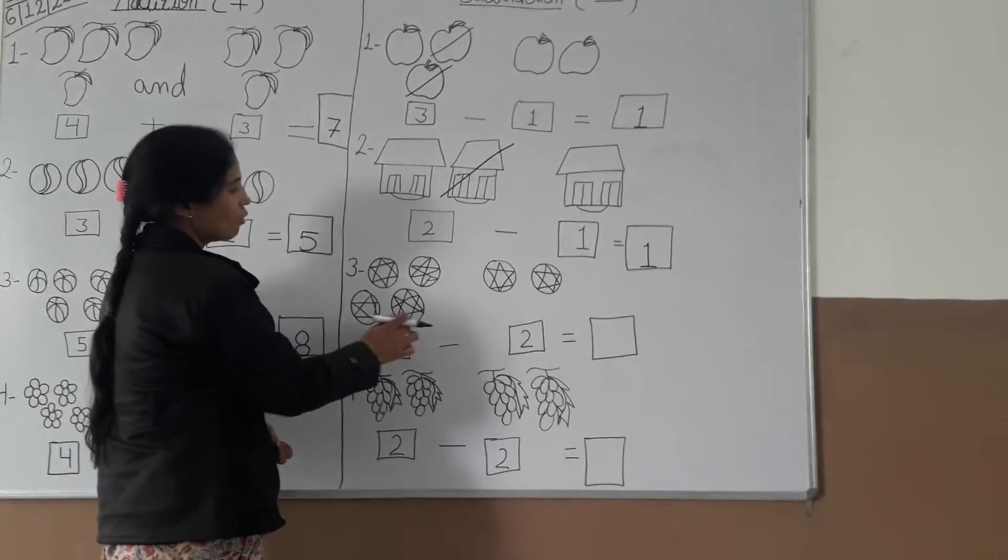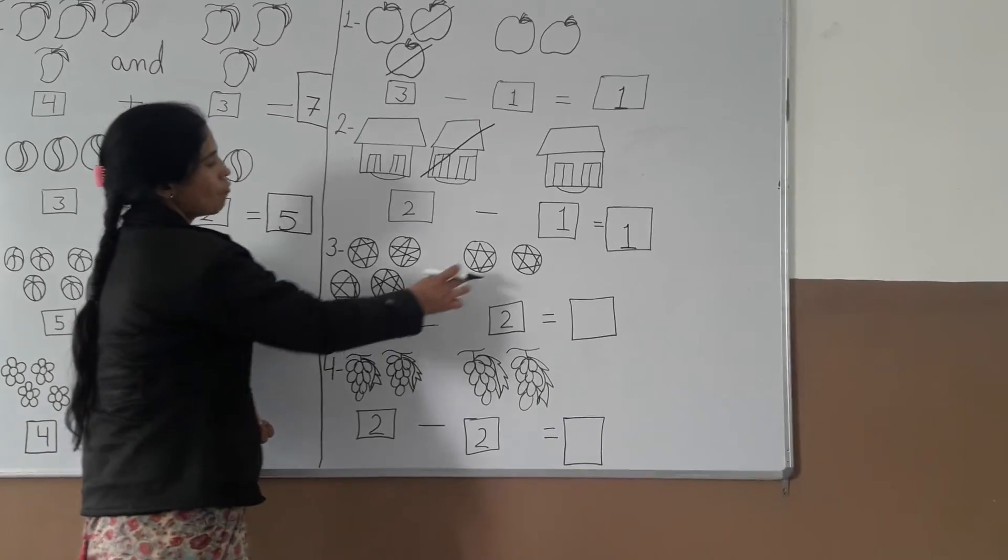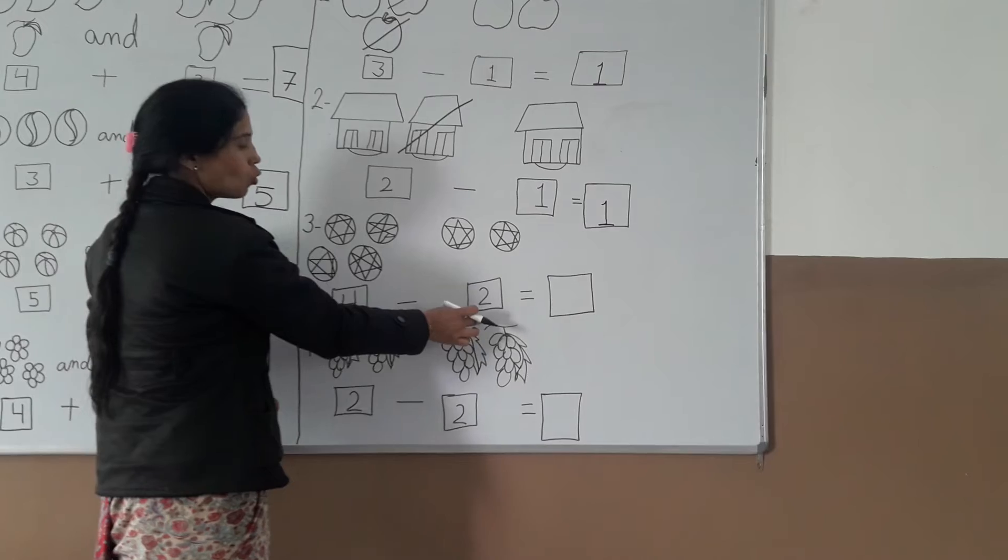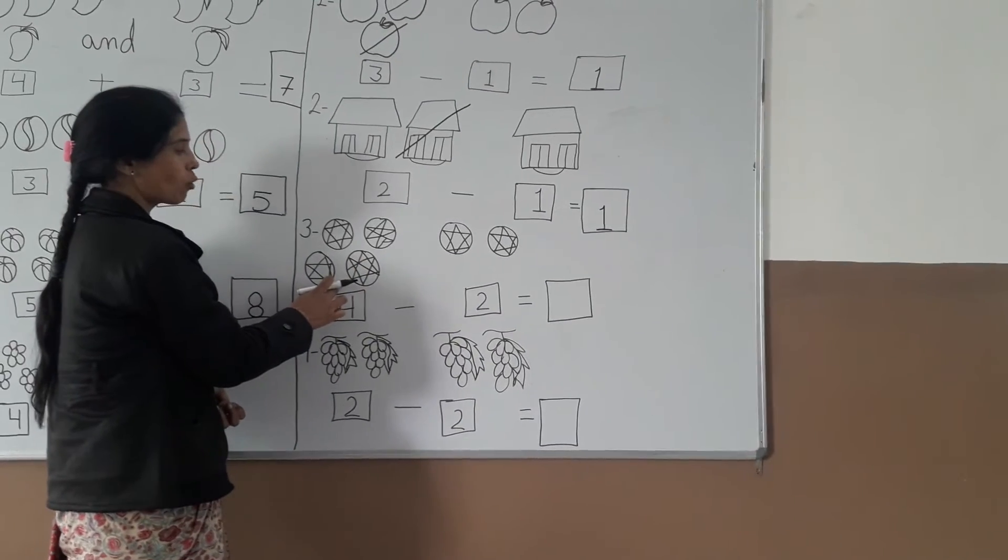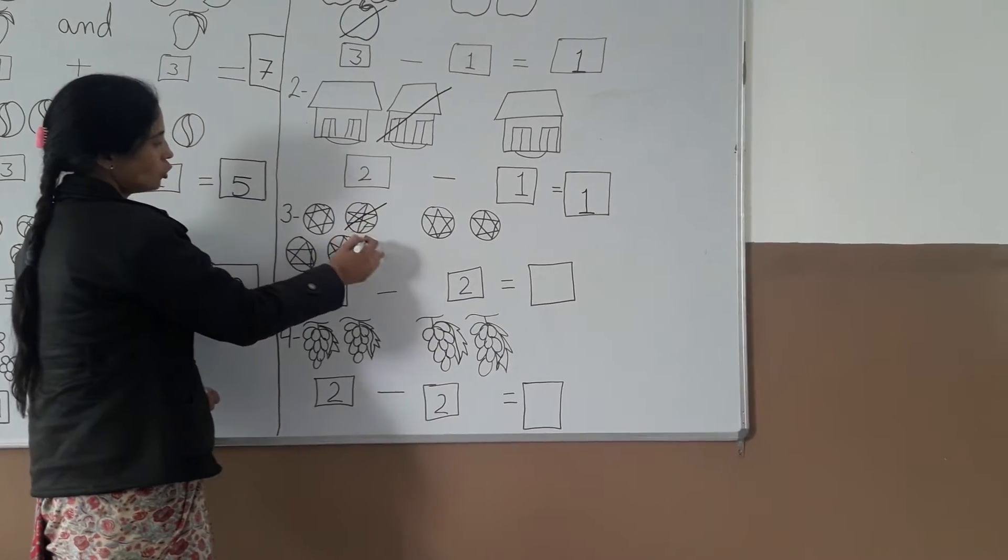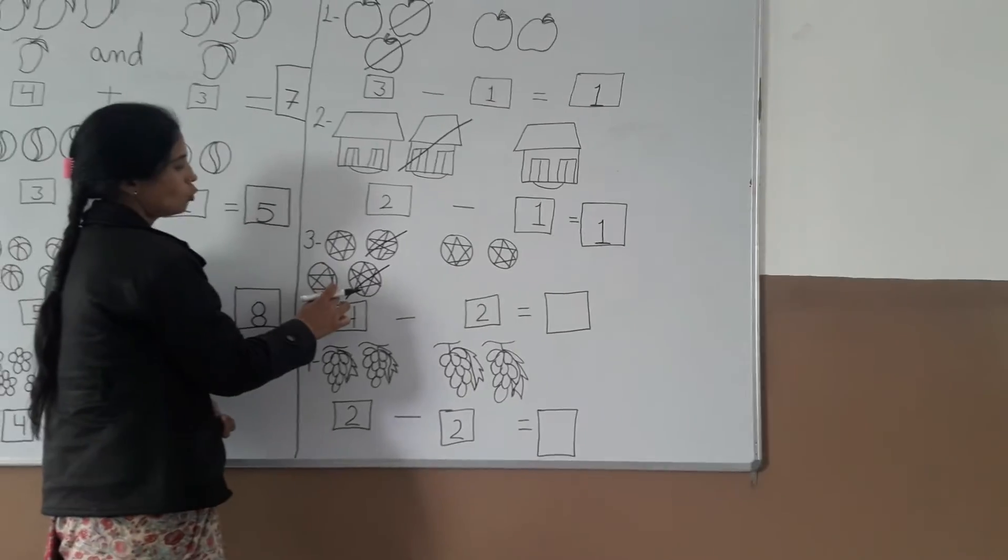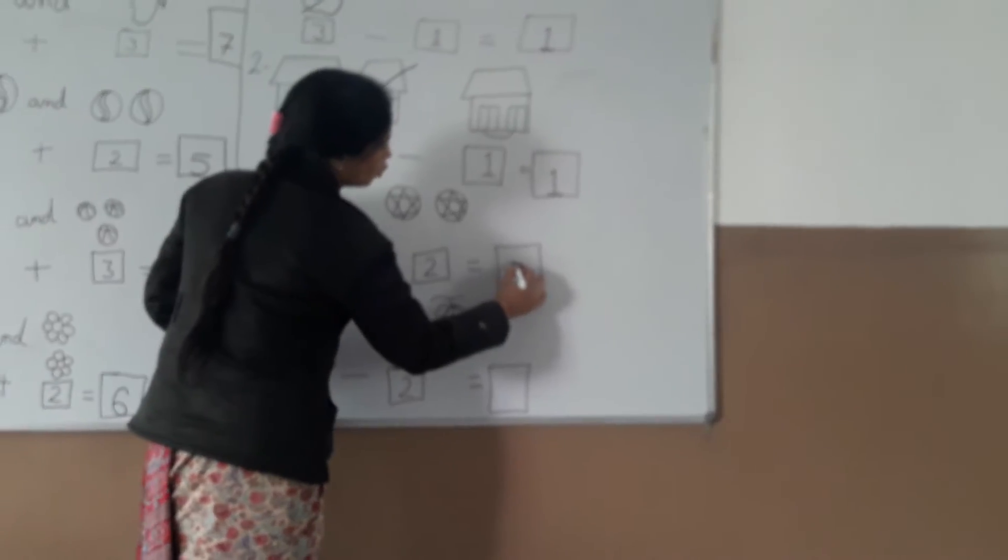Next example: one, two, three, four. Four. Minus: one, two. Two. Cross them out. Answer: one, two. Two.